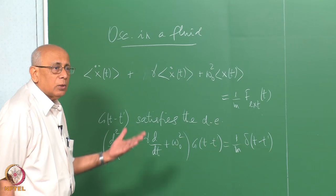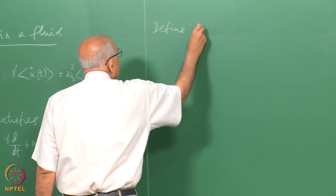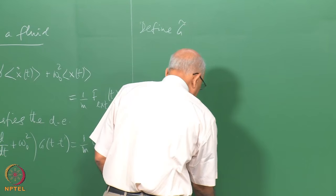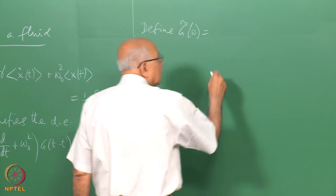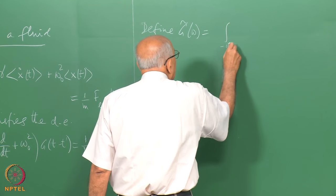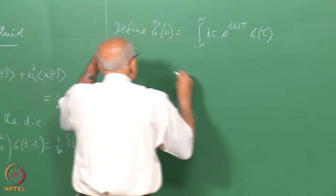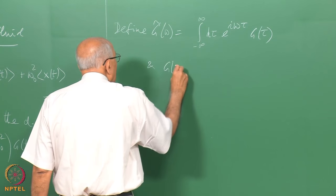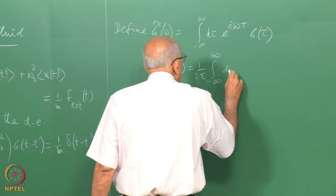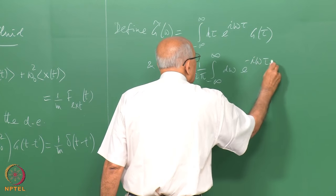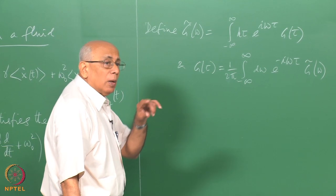The simplest way to solve this is by Fourier transforms. We define g̃(ω) as the Fourier transform: g̃(ω) = ∫_{-∞}^{∞} dτ e^{iωτ} g(τ), and the inverse: g(τ) = (1/2π)∫_{-∞}^{∞} dω e^{-iωτ} g̃(ω). We must be careful about the Fourier transform convention used throughout.